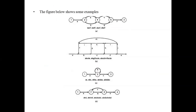Now let's see some examples of paths. In the first example, nodes 1 and 2 are entry and exit. From one particular flow graph, different paths can be represented: EACF is one path, EADF is another, EBCF is another, and EBDF is another. These are the paths that can be represented from a single flow graph.